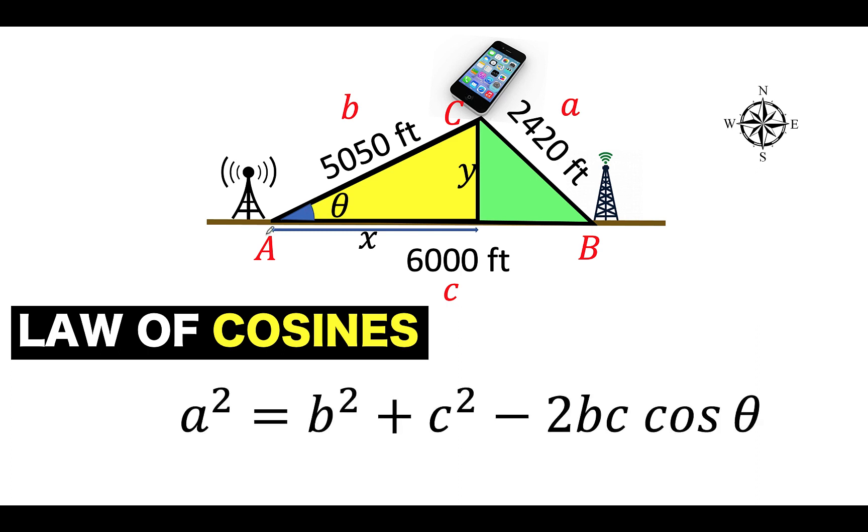So our unknown angle here is angle A, denoted by theta, and opposite this angle is the side with a length of 2,420. That is our a. Then our b is 5,050. Our c is 6,000. All we have to do is substitute that in this formula. So let's perform the computation now.